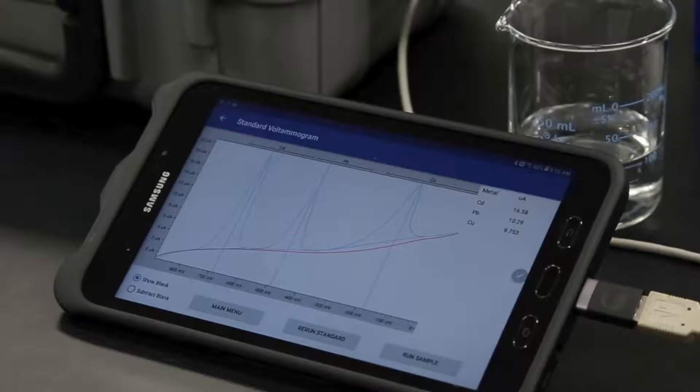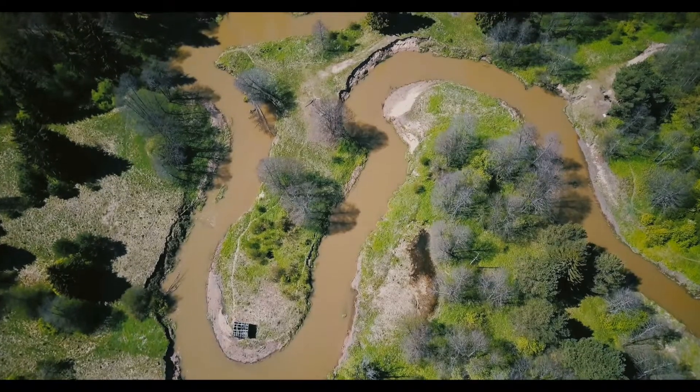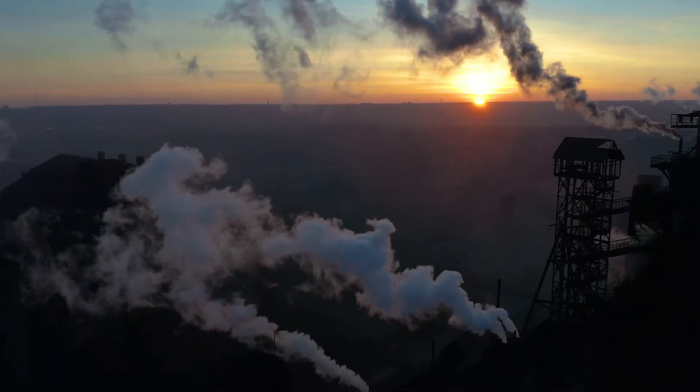The Microtrace PDV provides rapid results and detects trace metals down to 0.5 micrograms per liter, allowing for the immediate identification and resolution of on-site problems.